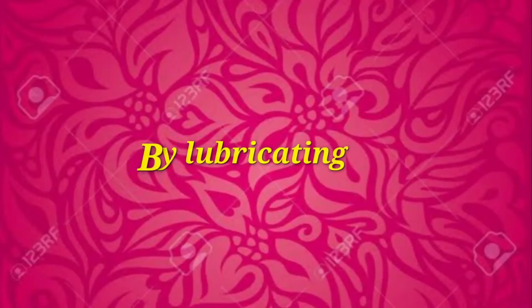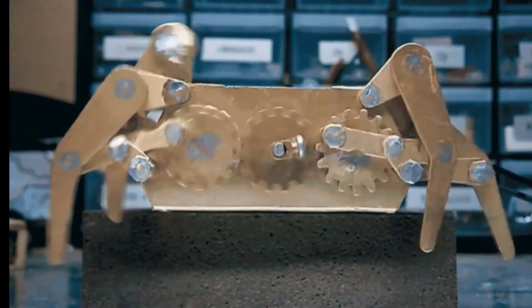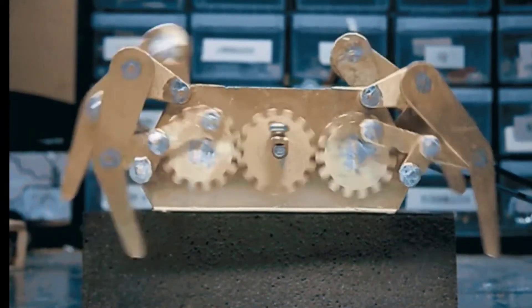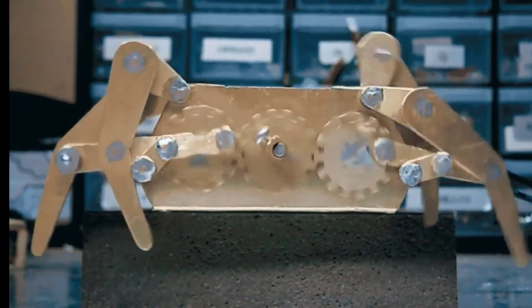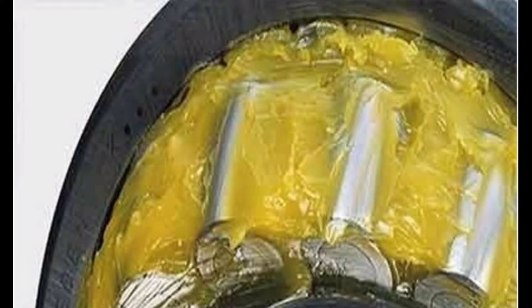First, by lubricating. We already know that smooth surfaces offer less friction. Moving parts of machines are therefore made very smooth. For this, the moving parts are covered with oil or grease. By the use of a suitable lubricant like oil or grease, friction can be reduced.